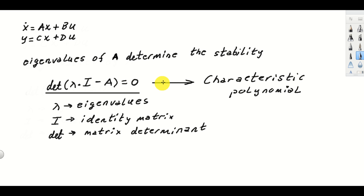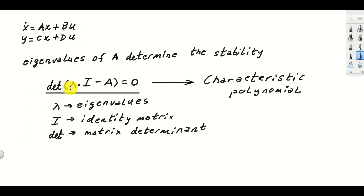So this is the characteristic polynomial. To summarize: eigenvalues of A determine the stability. The eigenvalues are computed as zeros of the characteristic polynomial. The characteristic polynomial is formed by taking the determinant of lambda times the identity matrix minus the matrix A. And that's it — simple as that.